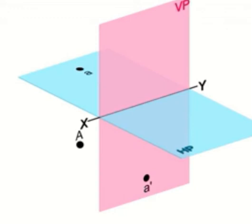When a point A is placed in the third quadrant, the orthographic projections are as shown in the figure. The front view will be on VP and the top view will be on HP.